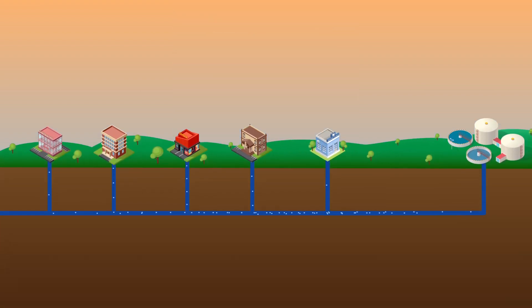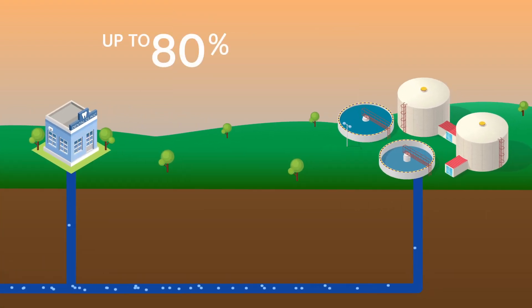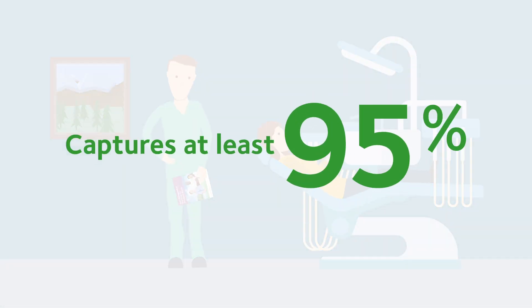Standard dental office equipment captures up to 80% of amalgam waste, and most of the remaining 20% is captured at wastewater treatment plants. However, adding an amalgam separator can allow an office to capture at least 95% of amalgam waste in order to recycle it.